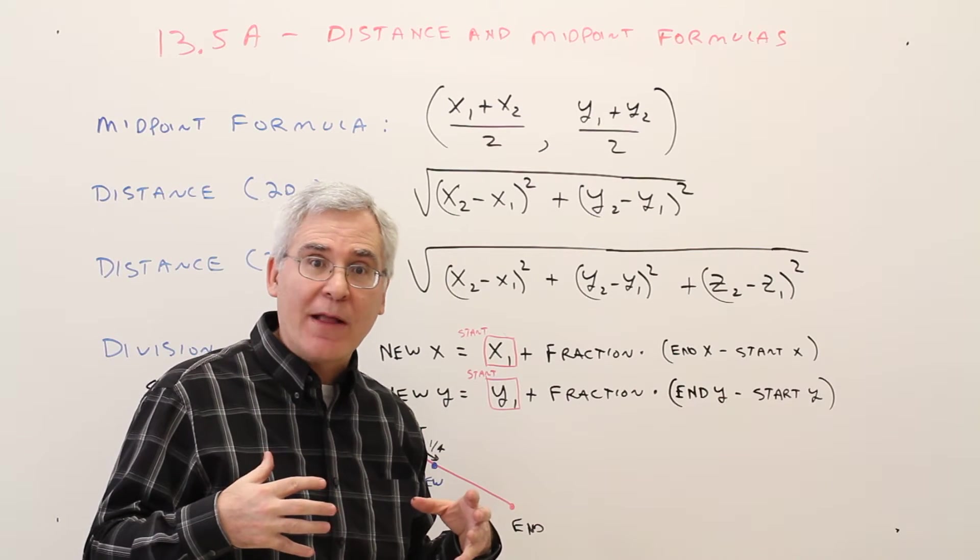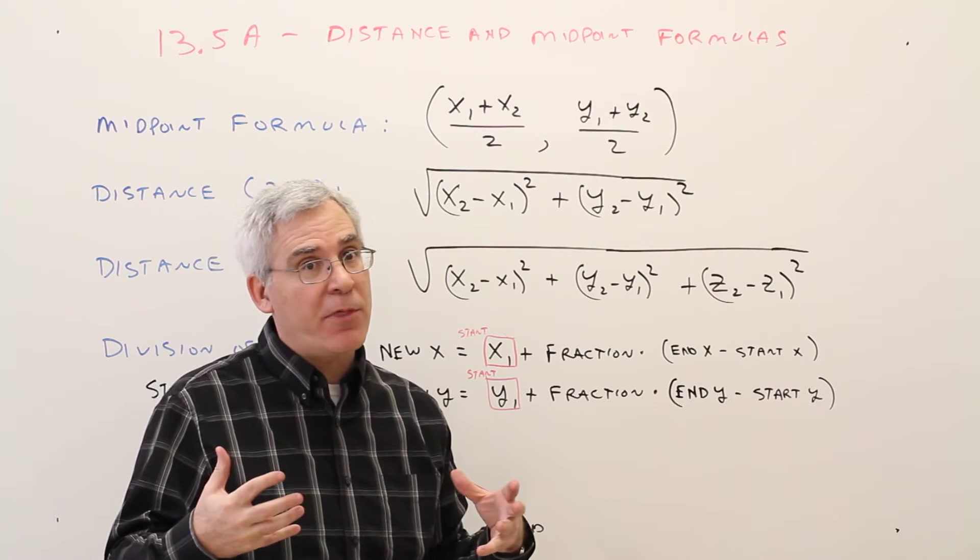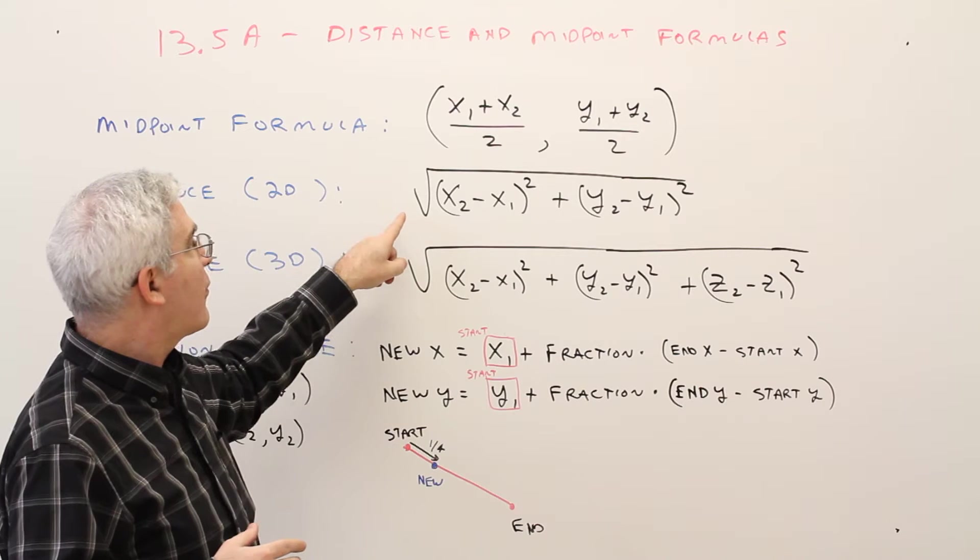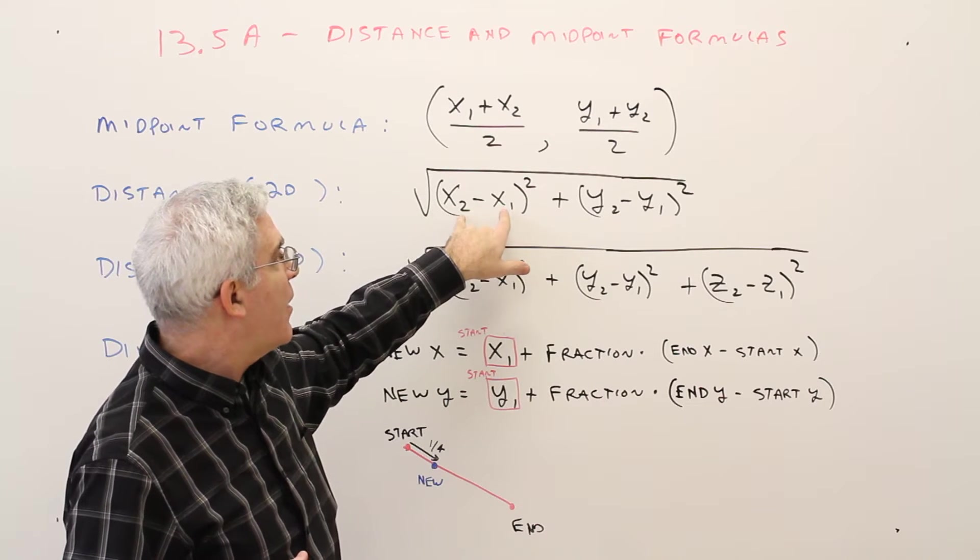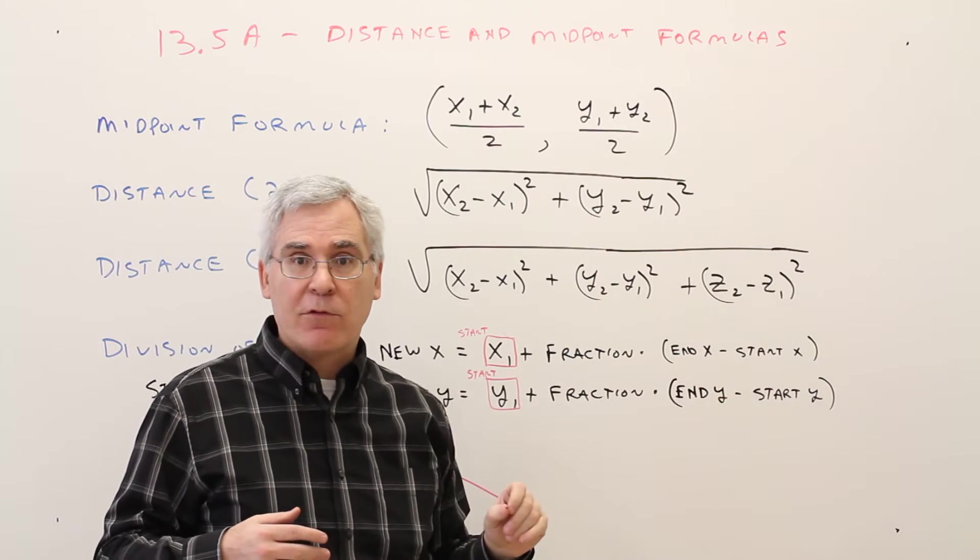Distance formula in two dimensions, really that stems from the Pythagorean Theorem. So it's a square root of the difference in x squared plus a difference in y squared.